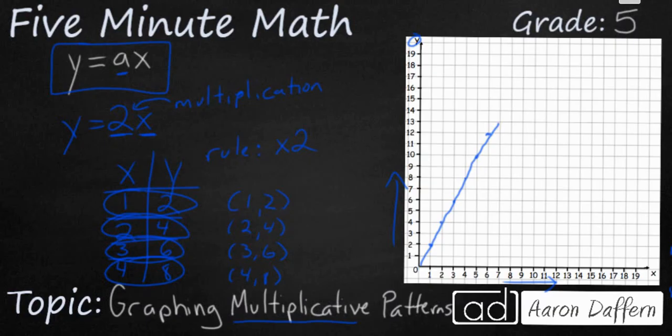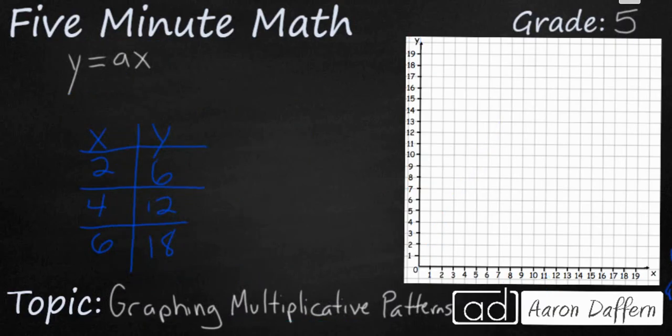Let's look at another example. In this case, we already have our table filled out with our x, y coordinates. We have 2, 6, 4, 12, and 6, 18.